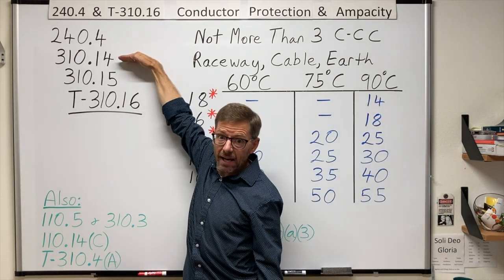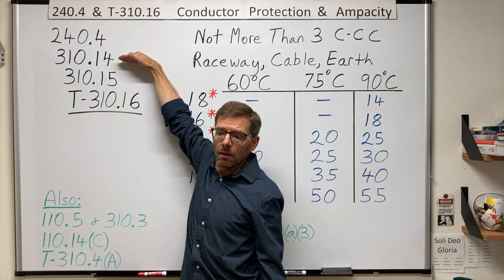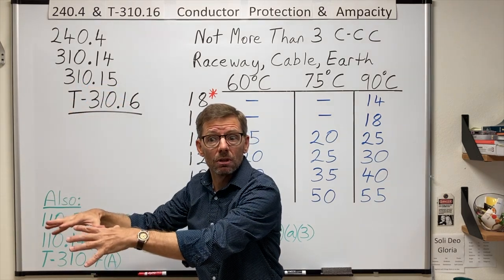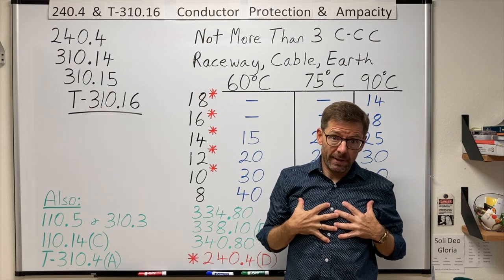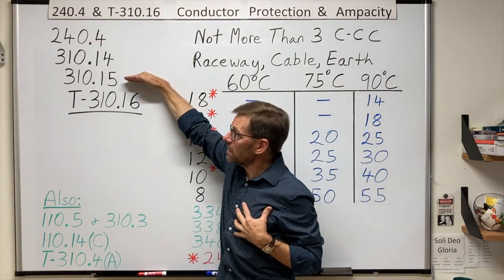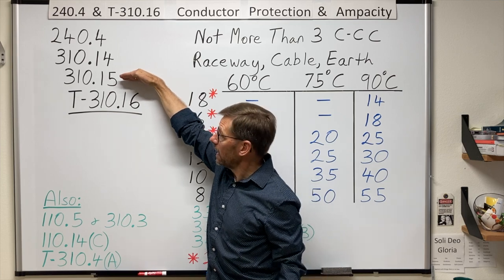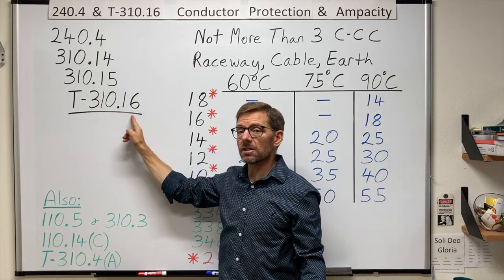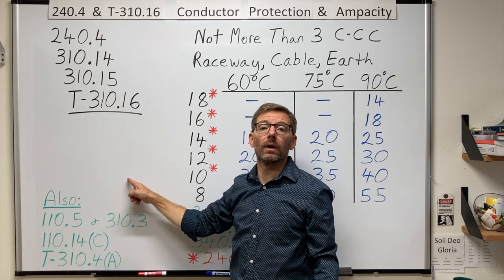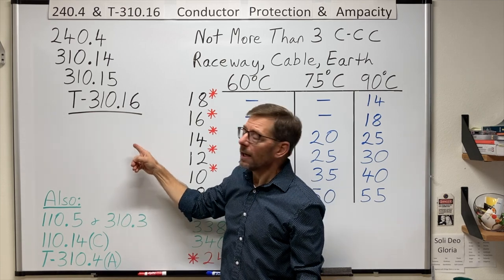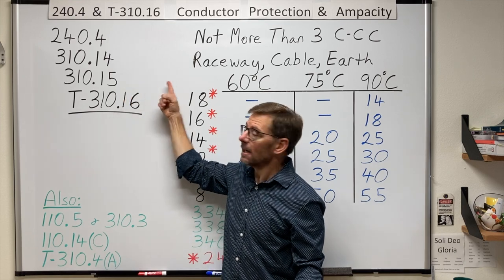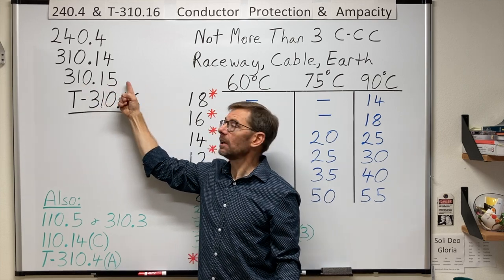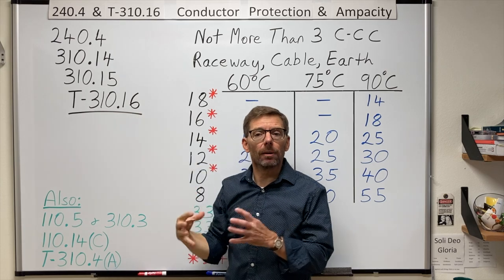But generally speaking, we're using the ampacities in 310.14. And it gives me two options in there. I can do a bunch of calculations under engineering supervision. Or, more from an electrician's perspective, it says, look at 310.15. And in there, I'm given any number of tables to use, a half dozen of them. Table 310.16 down through .21. So again, I have to finish the sentence. It says, use these tables as modified in 310.15, a through f. And we will talk about some of those in a couple moments.